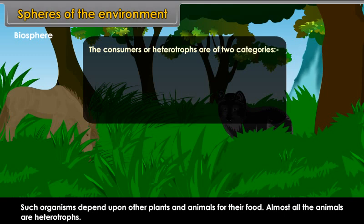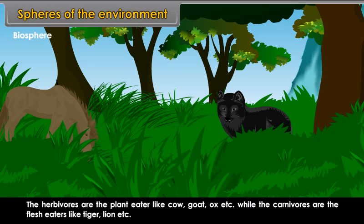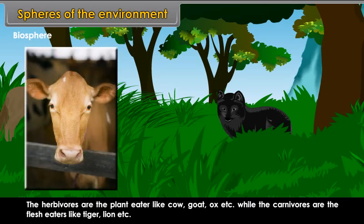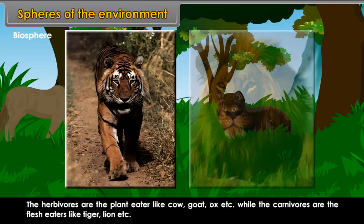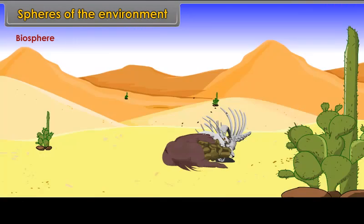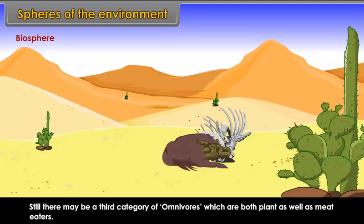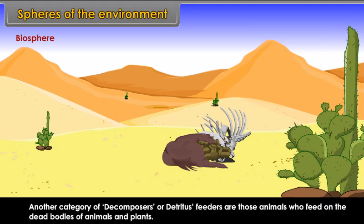The herbivores are plant eaters like cow, goat, ox, etc., while the carnivores are flesh eaters like tiger, lion, etc. There may also be a third category of omnivores, which are both plant as well as meat eaters. Another category, decomposers or detritus feeders, are those animals who feed on the dead bodies of animals and plants.